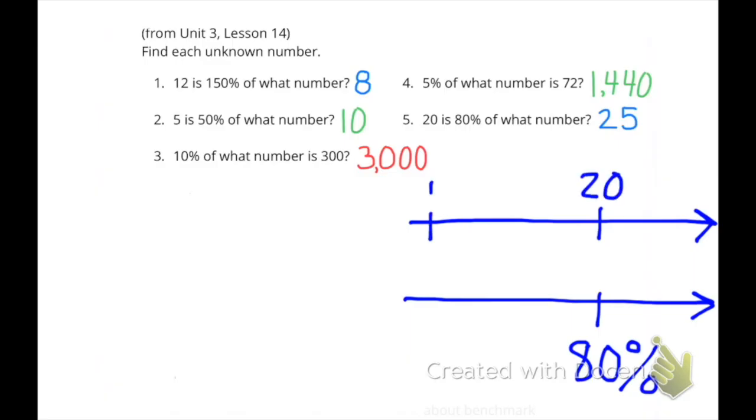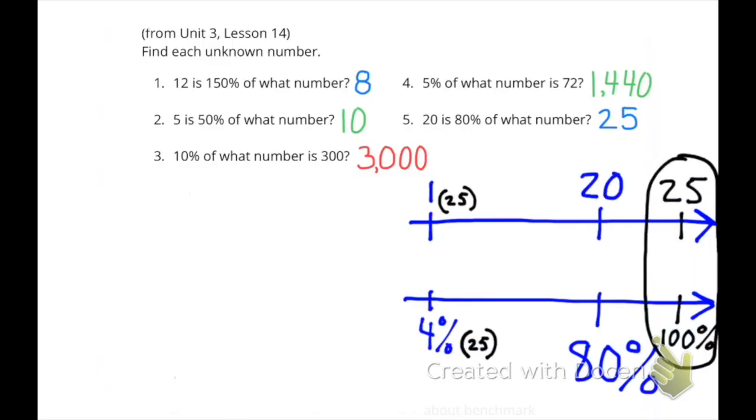Number five. Twenty is eighty percent of what number? Well, we know that twenty is eighty percent of the number. Twenty divided by twenty is one. Eighty percent divided by twenty is four percent. Four percent times twenty-five is one hundred percent, and one times twenty-five is twenty-five. Twenty is eighty percent of twenty-five.